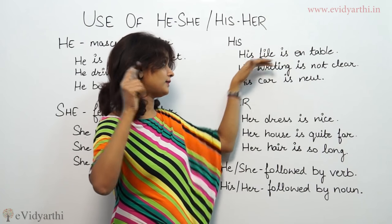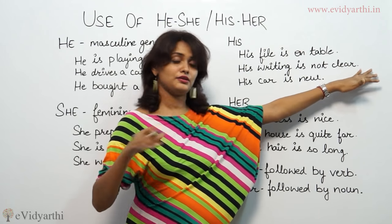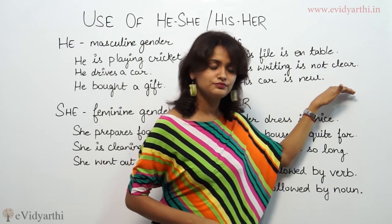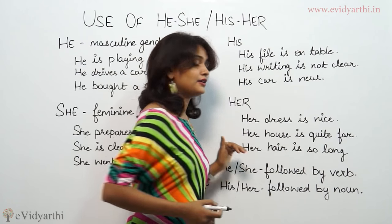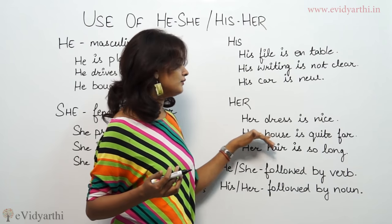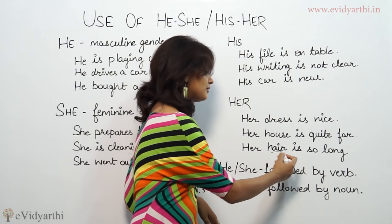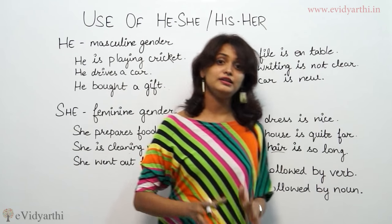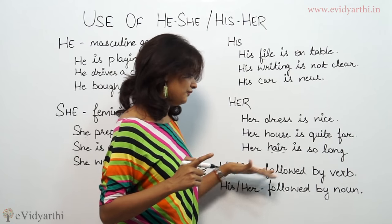File here is a kind of noun. 'His writing is not clear.' In any tense, immediately after 'his' you mention a noun. 'His car is new.' The same applies with her: 'Her dress is nice' — after 'her' we are writing 'dress,' which is a noun. 'Her house is quite far.' 'Her hair is so long.' So here also, after 'her' we are putting a noun immediately.